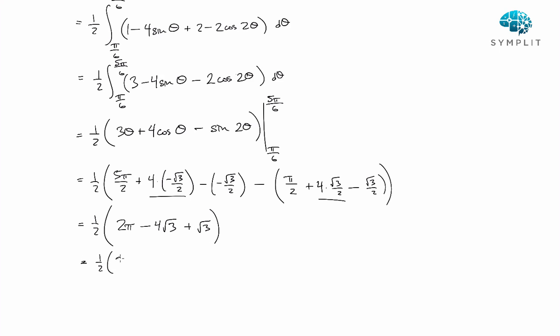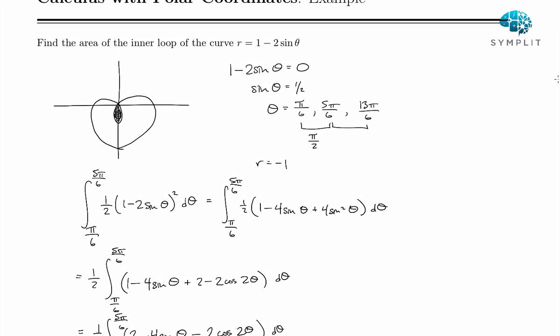And so we have 1 half times 2 pi minus 3 root 3. And let's go ahead and bring that 1 half in, we get pi minus 3 root 3 over 2. And that is the area of our inner loop.